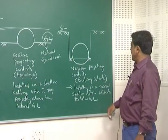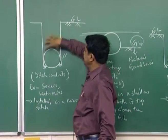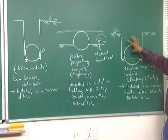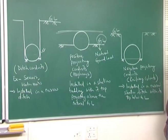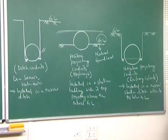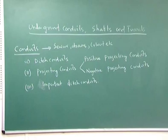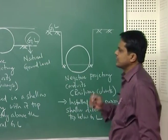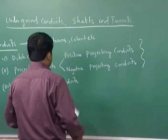In the case of negative projecting conduits: installed in a narrow shallow ditch. If we look at the two types, one is a long ditch and one is a very small or narrow ditch. In this case, the part has been installed so that the ground level is slightly higher. So in this case it is called negative projecting conduits. The whole conduit classification is divided into: ditch conduits, and projecting conduits which has two parts — positive projecting conduits and negative projecting conduits. Now we will start one by one discussing how the stress variations and stress formation occur. Let us start with ditch conduits.